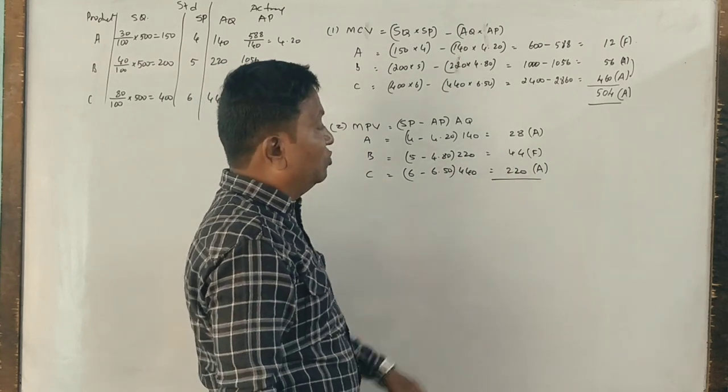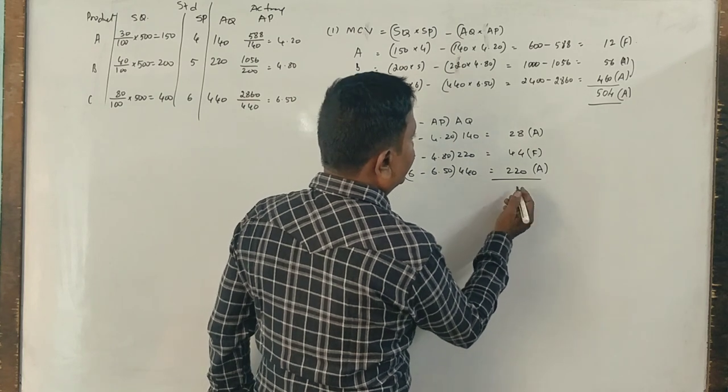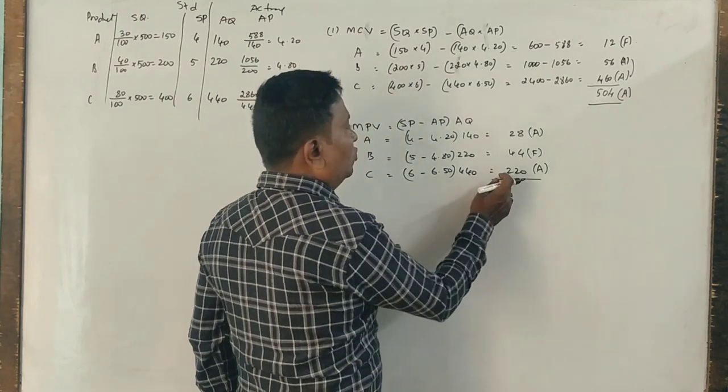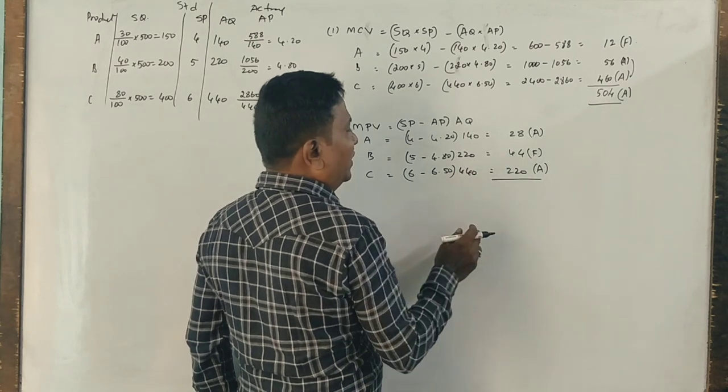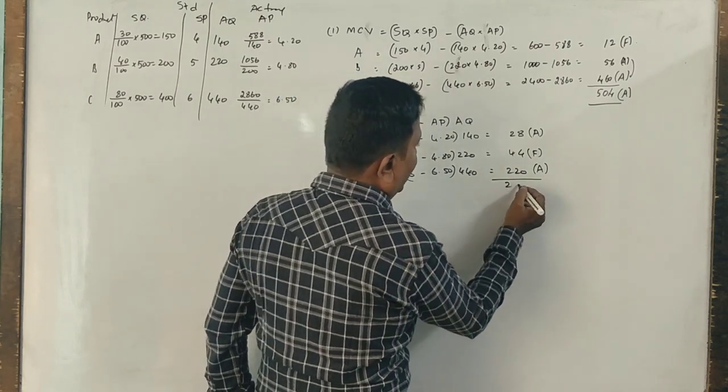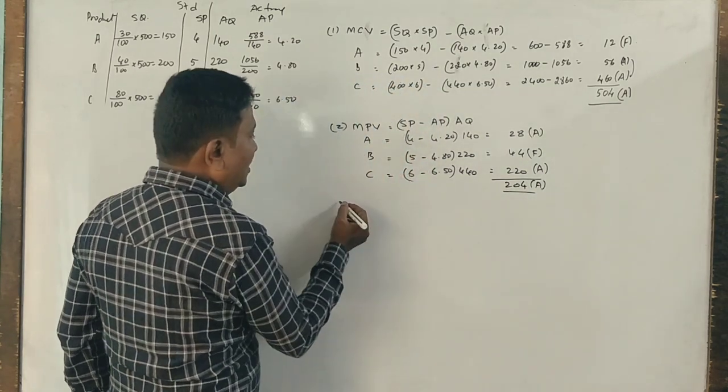Now 220 plus 28 is 248 minus 44 favorable is 204 adverse total.